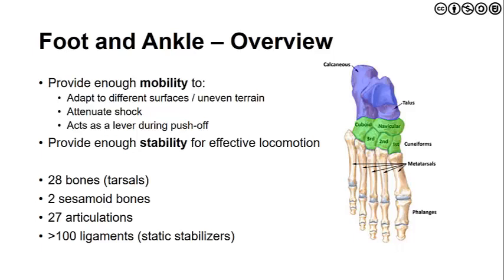As we begin with our overview of the foot and ankle, we have to first recognize two concepts. First, the foot and ankle has to provide enough mobility to adapt to varying surfaces — in essence mold to uneven or variable terrain — to attenuate shock, absorb it, and dissipate it, and then to act as a rigid lever during the push-off phase of gait. It also has to provide enough stability for effective locomotion. We have to hold these two concepts in tension — it really is almost a paradox of how a region can have lots of mobility while also providing lots of stability.